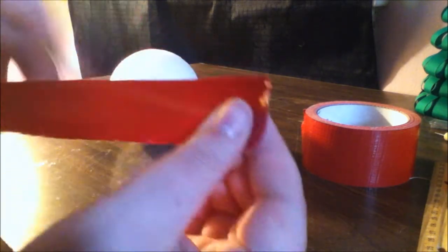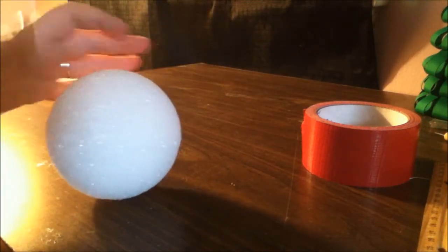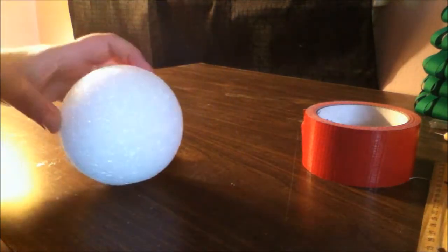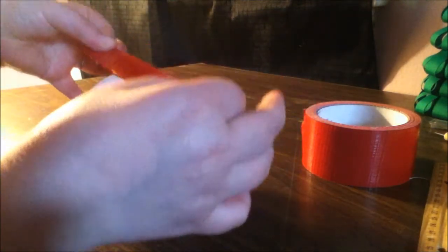So you end up with half a strip and then you're going to take your four inch styrofoam ball and you're just going to put the duct tape right on it.